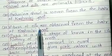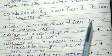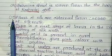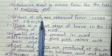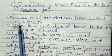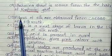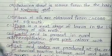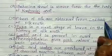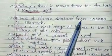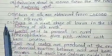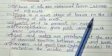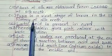Number 9: Pashmina shawl is woven from the hair of Kashmiri goat. Number 10: Fibers of silk are obtained from the cocoon of the silk moth. The answer in the blank is cocoon.